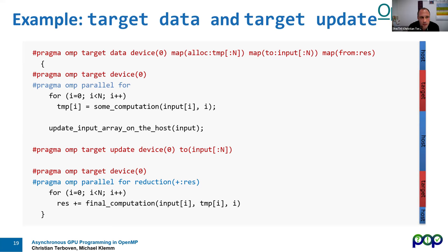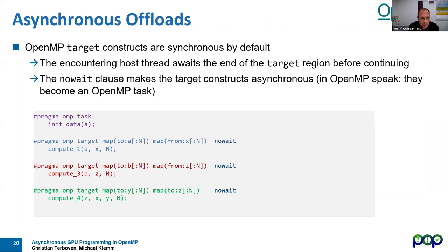We also have the 'target update' construct for unstructured scenarios or triggering data movement within a target data region. If we update an input array on the host mid-computation, we use 'target update to(input)' to send the updated values — or even just a slice — from host to device while the target data region is still active, then call the next computation on the device.